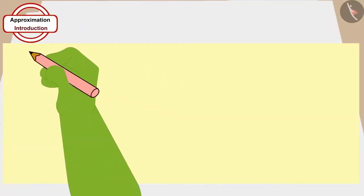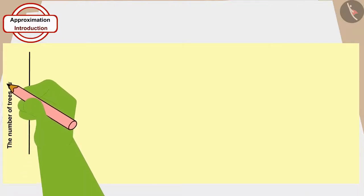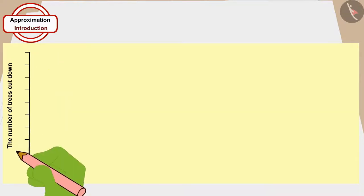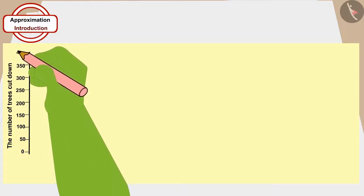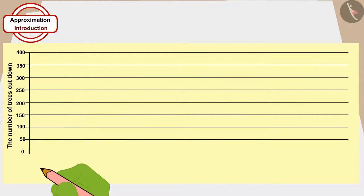Tufan immediately took a piece of paper and drew a vertical line on it, depicting the number of trees cut down every month from the beginning. On this, he wrote numbers at a gap of half a centimeter from 0 to 400 in increments of 50. He drew a horizontal line from each number. Then, in between every two numbers, he drew four small lines at equal distance.